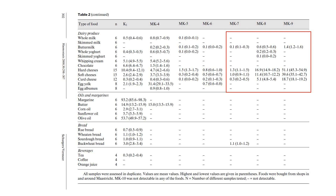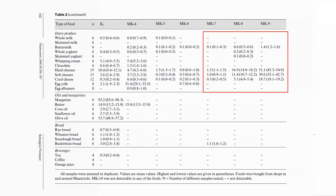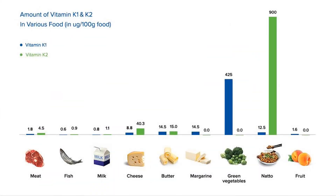However, the bioavailability of these long-chain menaquinones produced by gut bacteria is uncertain. So given that dark green leafies provide only phyloquinone, animal products provide primarily MK4, and we don't know how much MK7 we absorb from our gut — does that mean we have to rely on fermented foods, of which really only natto is a good source?